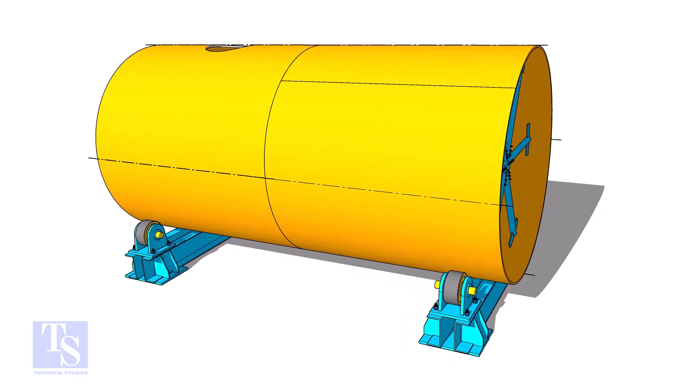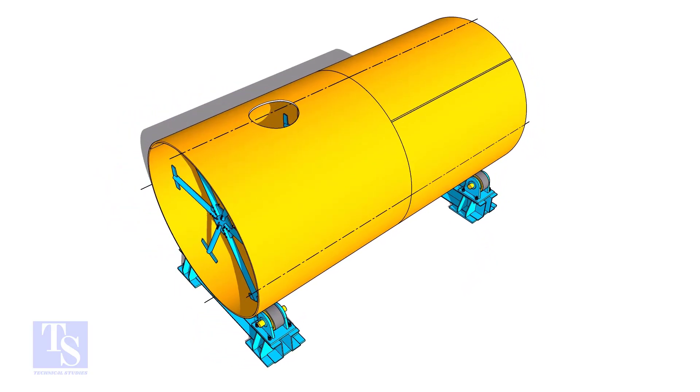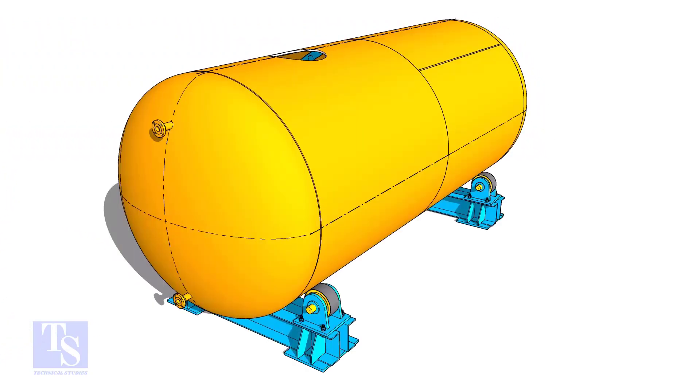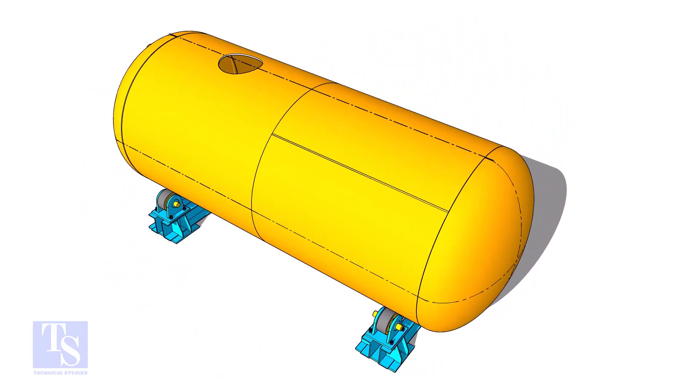Mark the shell nozzles and manhole openings. Cut the holes and make the bevels. Don't fit up the nozzles now, because after fixing the nozzles, rotating the tank may be difficult.